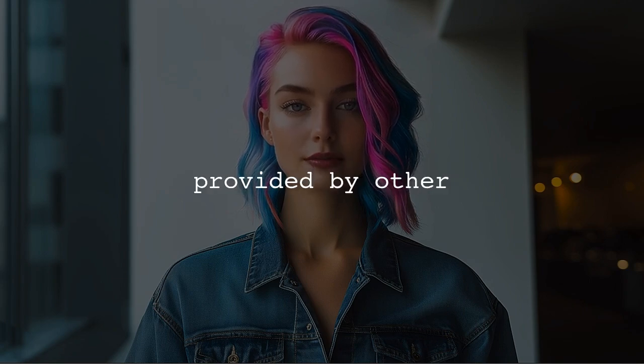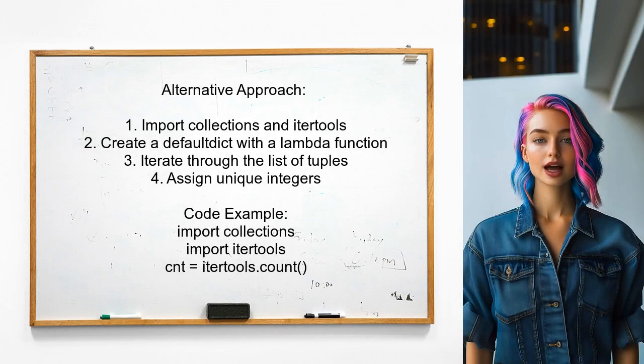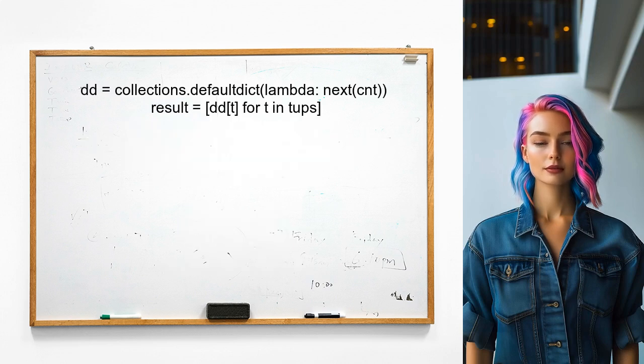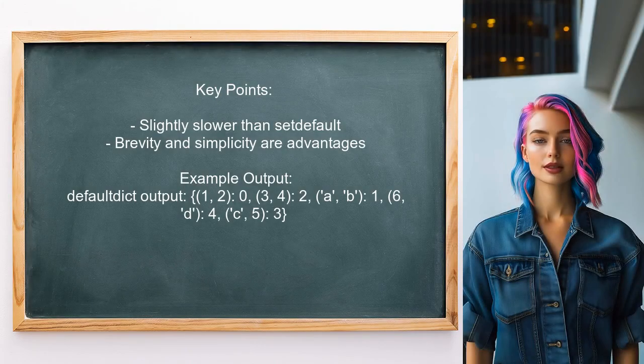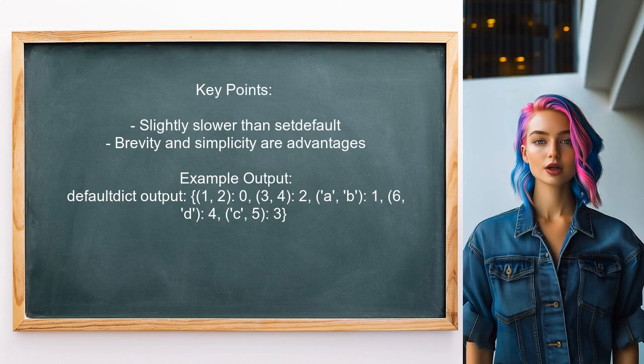Now let's look at the answers provided by other users. An alternative approach suggested by a user involves using defaultDict from the collections module. This method utilizes a lambda function to assign unique integers to each tuple in the list. While this method may be slightly slower than using setDefault, its brevity makes it an attractive option for factorizing lists of tuples.